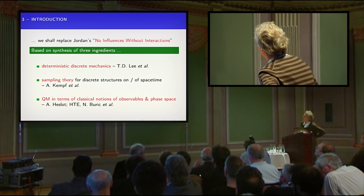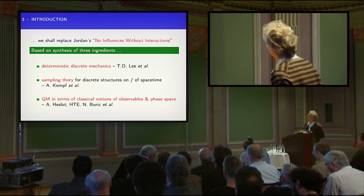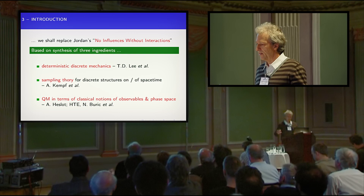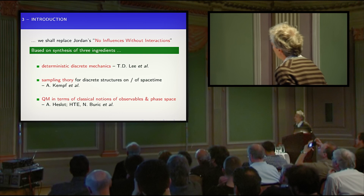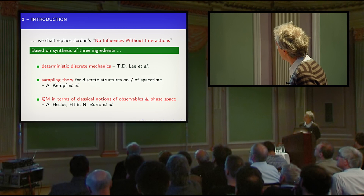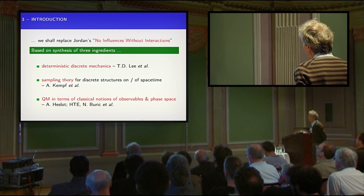What I want to do is replace this assumption — 'no influences without interactions' — by something else. What I have to say is based on three very different strands of thought, which are quite old. For example, deterministic discrete mechanics has been brought up by Lee and Friedberg mostly. About 25 years ago, sampling theory has been advocated recently by Kempf in the last 10 years, all for very different purposes.